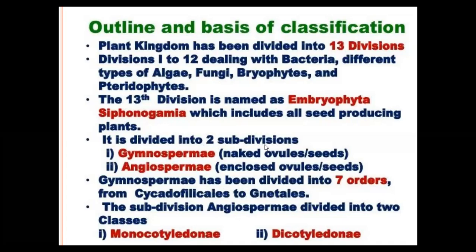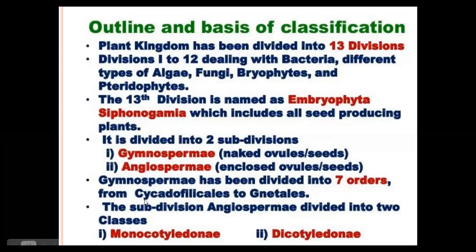The two subdivisions are Gymnospermae, with naked ovules or seeds, and Angiospermae, with enclosed ovules or seeds. The first subdivision, Gymnospermae, has been divided into 7 orders, from Cycadophilicales to Gnetales.